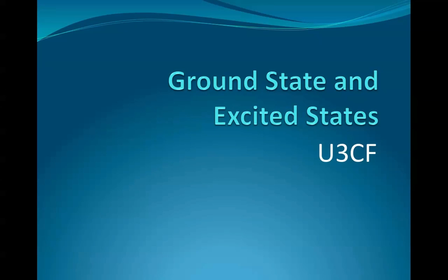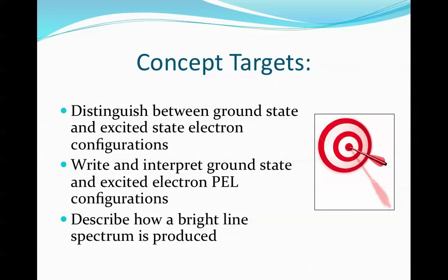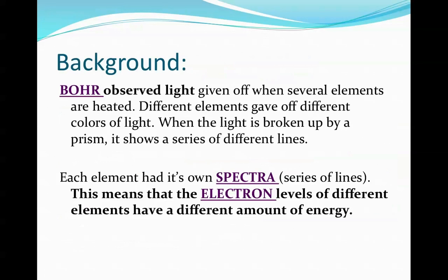In concept F we're going to be focusing on what's called the ground state and excited states in terms of our electrons and also discussing how a bright line spectrum is produced. Students should be able to distinguish between ground state and excited state electron configurations, write and interpret them, and describe how a bright line spectrum or light is produced from an atom.